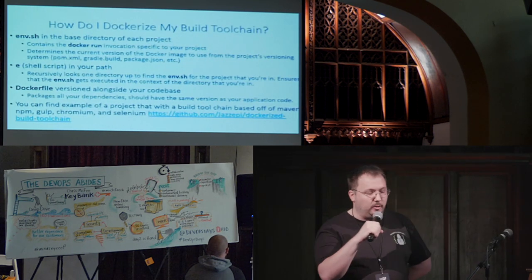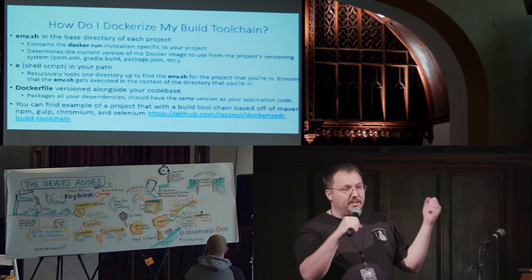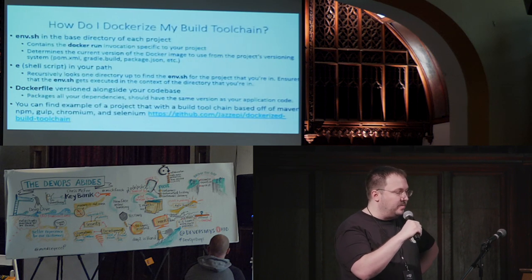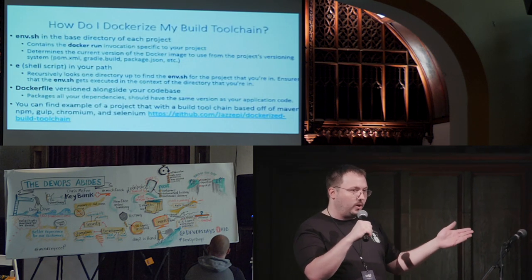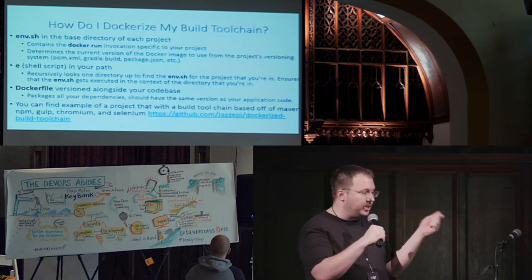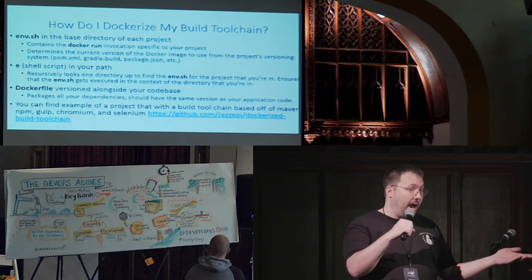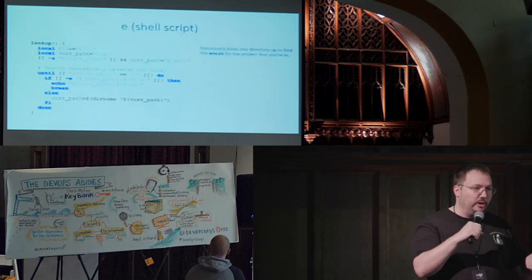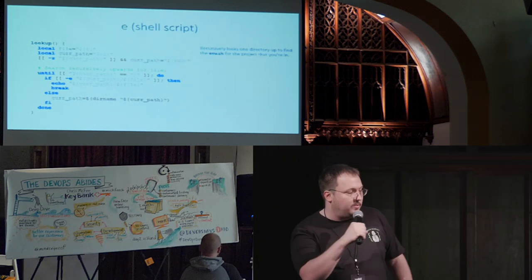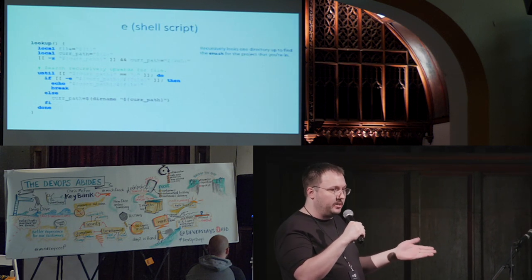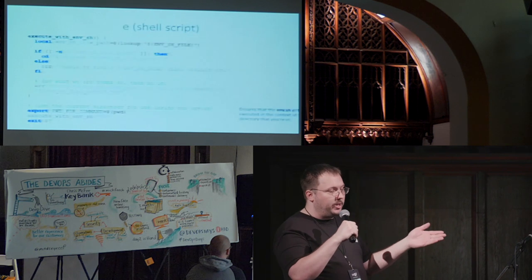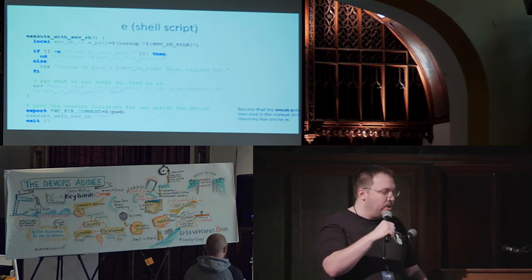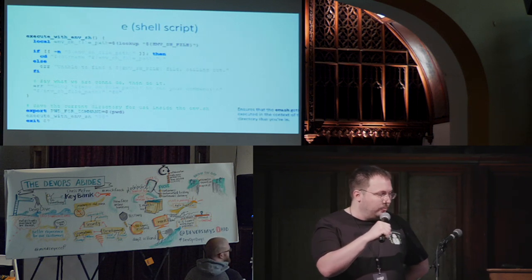The way you do this involves three things. Each project has a Dockerfile containing the dependencies you need — things like Ruby and any binaries. Then you have an env.sh, which invokes Docker with all the different options you want to pass into it. You also have something called 'e' — a shell script that lives on your path and knows how to find env.sh and invoke it. The 'e' shell script looks up and finds env.sh, making sure it gets invoked with the correct path, making the whole thing transparent to developers. They just type 'e' followed by their normal command and it gets invoked. The script passes the command off to env.sh, which invokes it using Docker.